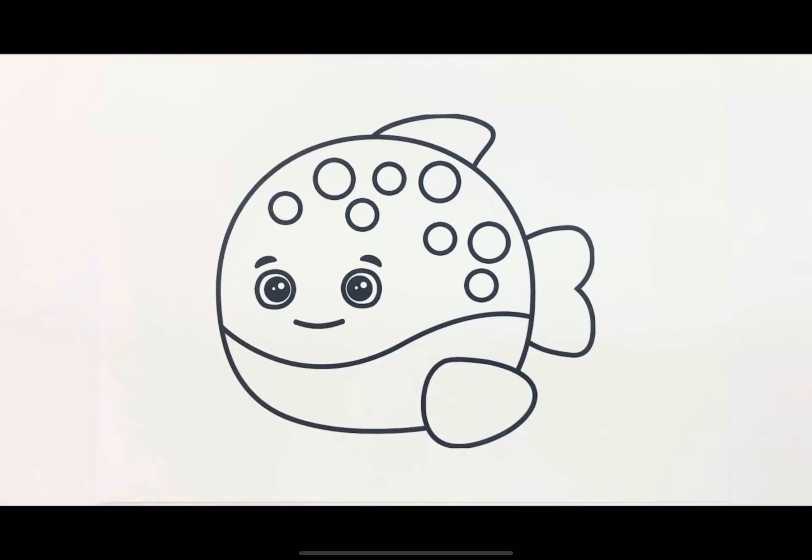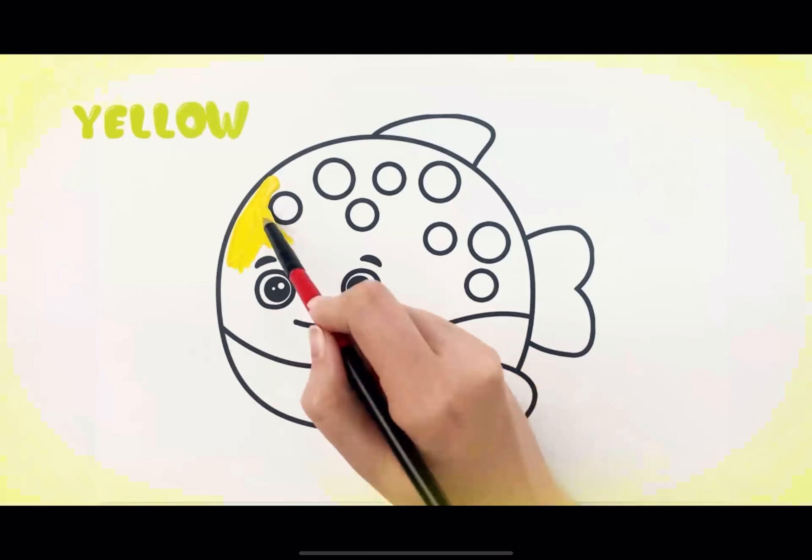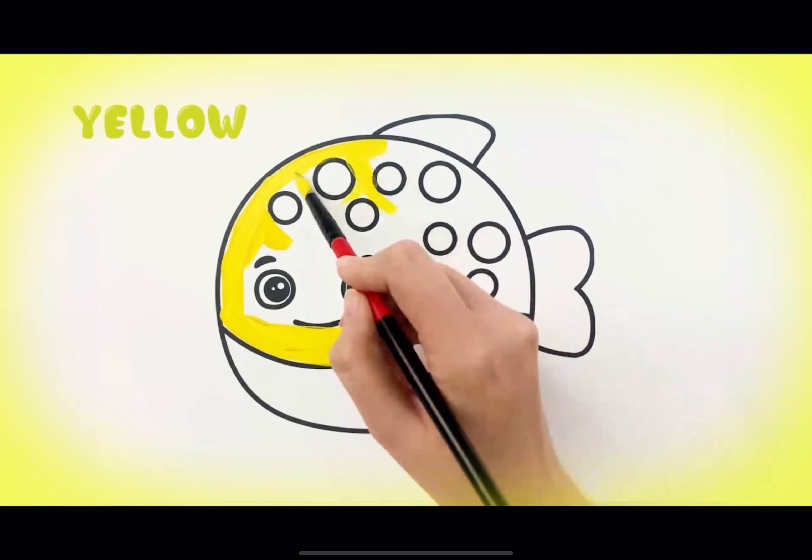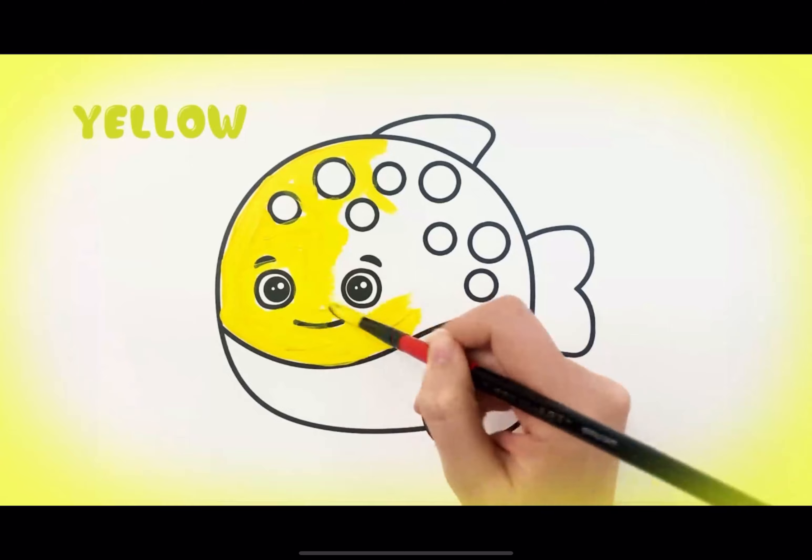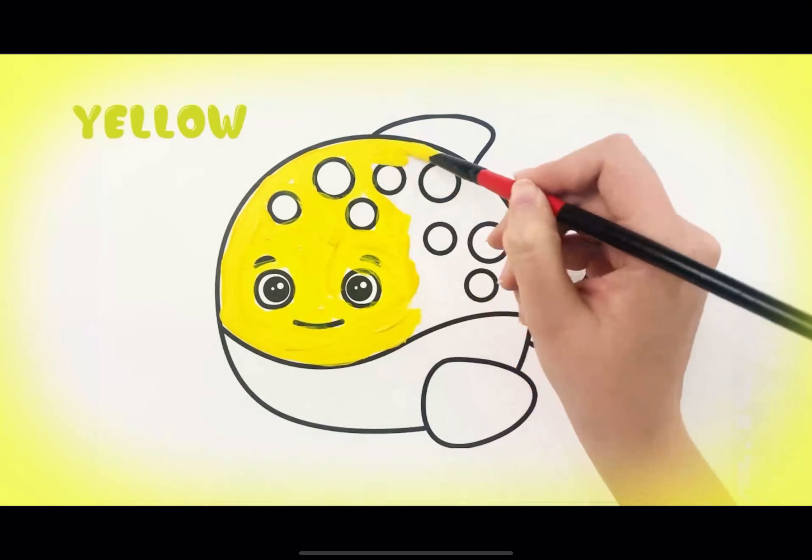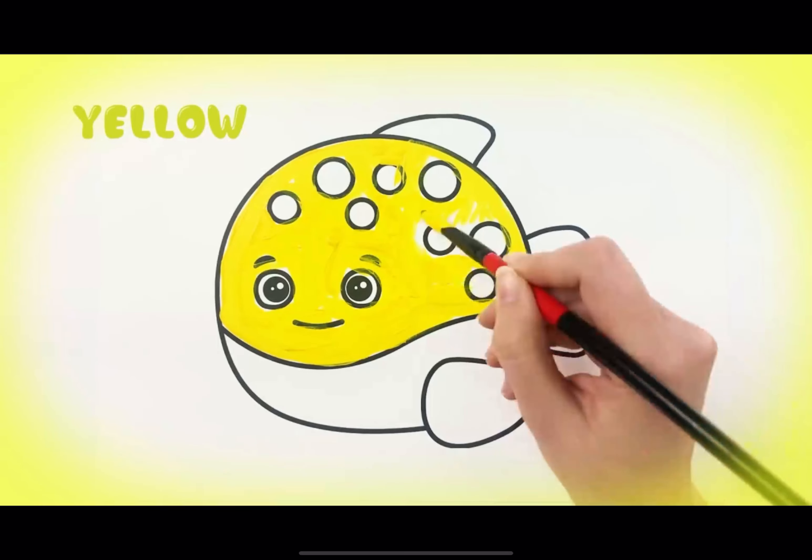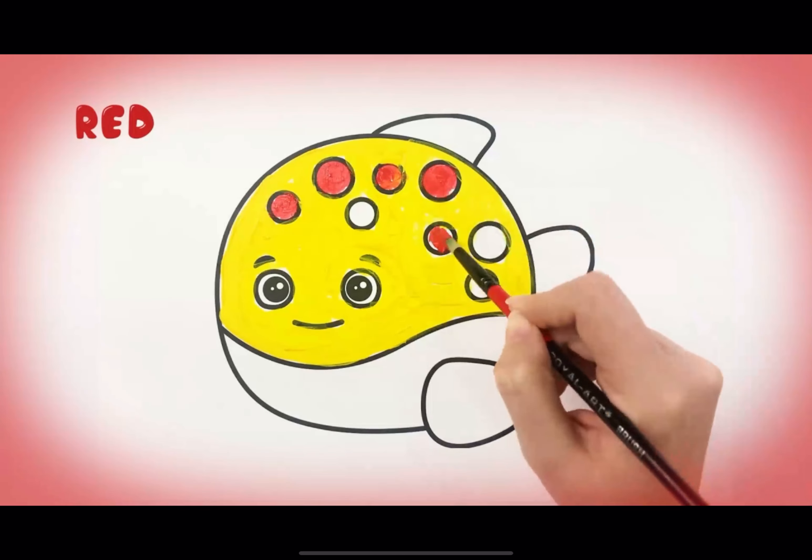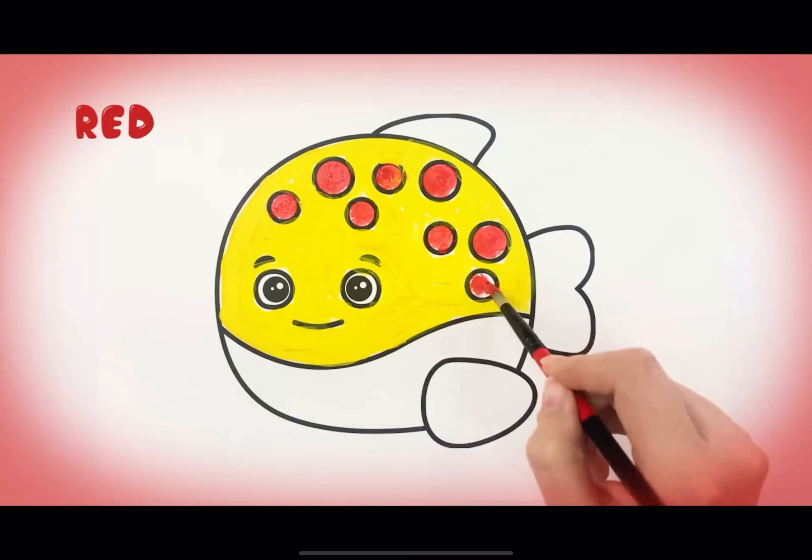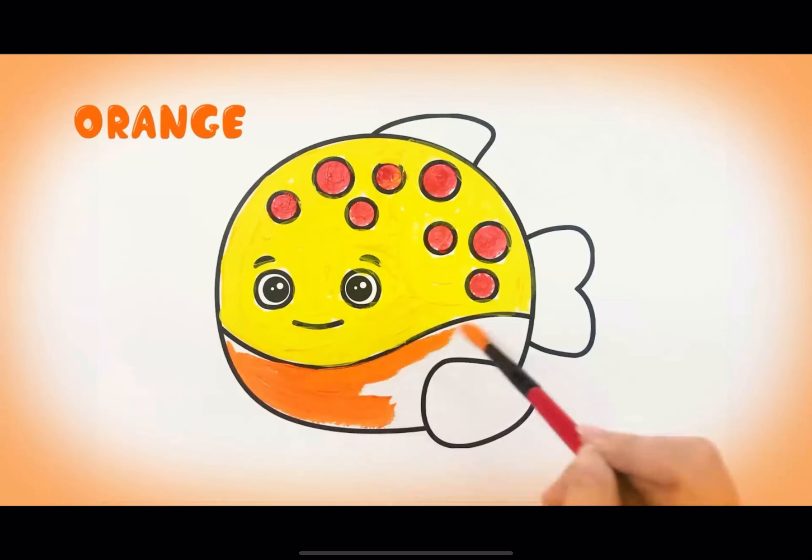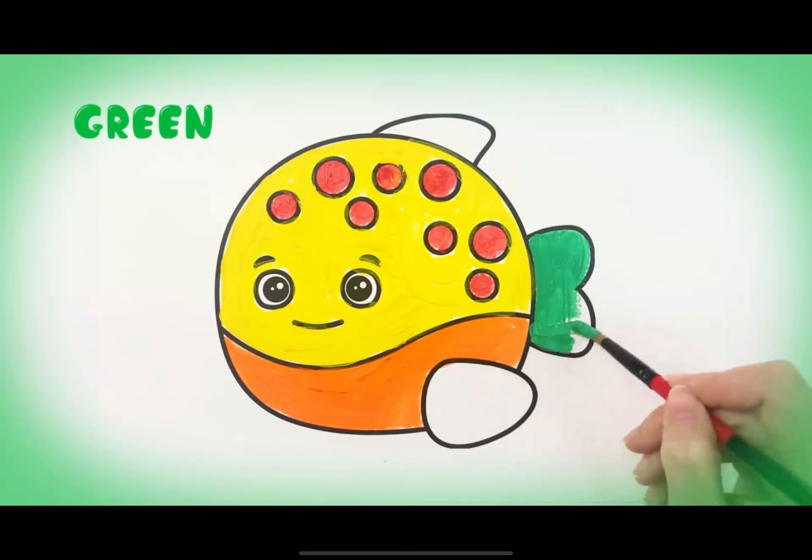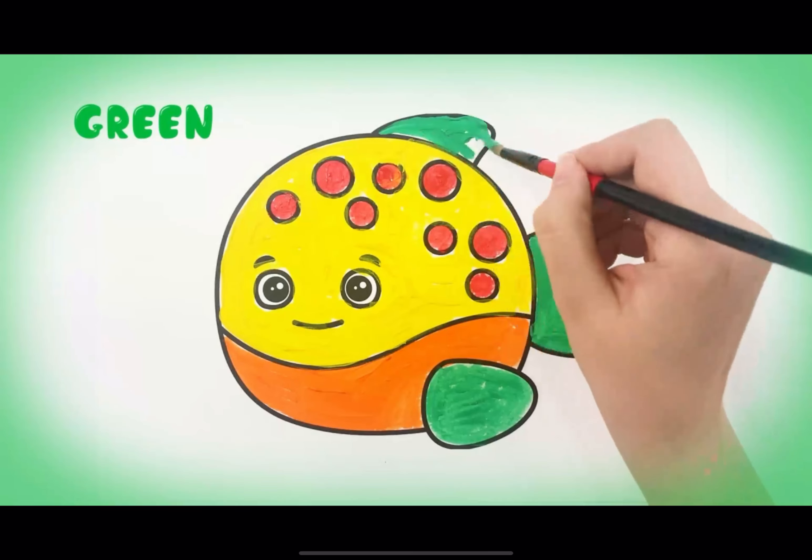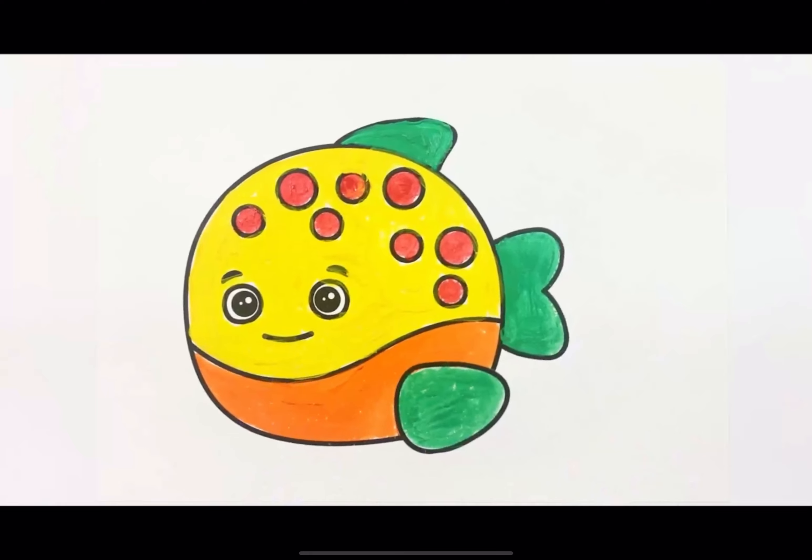Let's see how to color this fish. Yellow, red, orange, green. That looks nice.